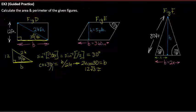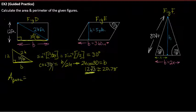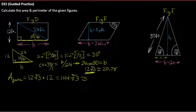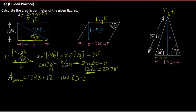Our base is 12√3, approximately 20.78 feet. To find the area: base times height equals 12√3 times 12, which is 144√3. Throwing that into the calculator gives approximately 249.42 square feet.